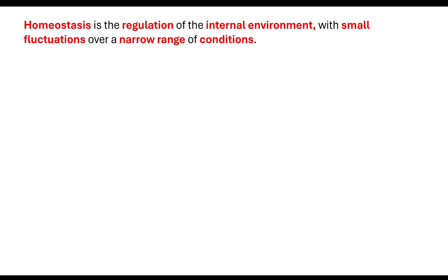Homeostasis is the regulation of the internal environment. What we want to do is maintain our internal environment within a very narrow limit, where we have very small fluctuations maintained within a small range. There are things like our water levels for osmoregulation, our glucose regulation, our carbon dioxide concentration, and our temperature regulation — thermoregulation.